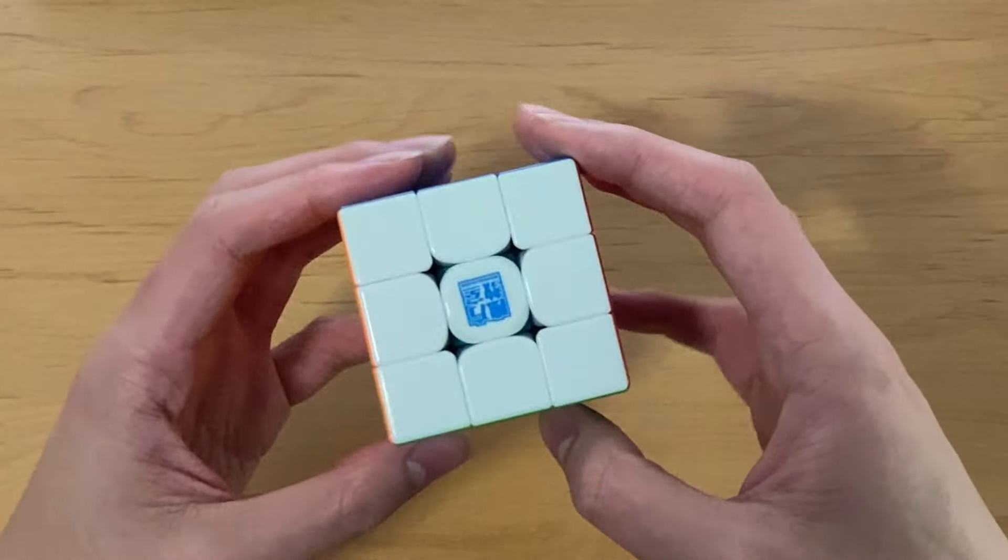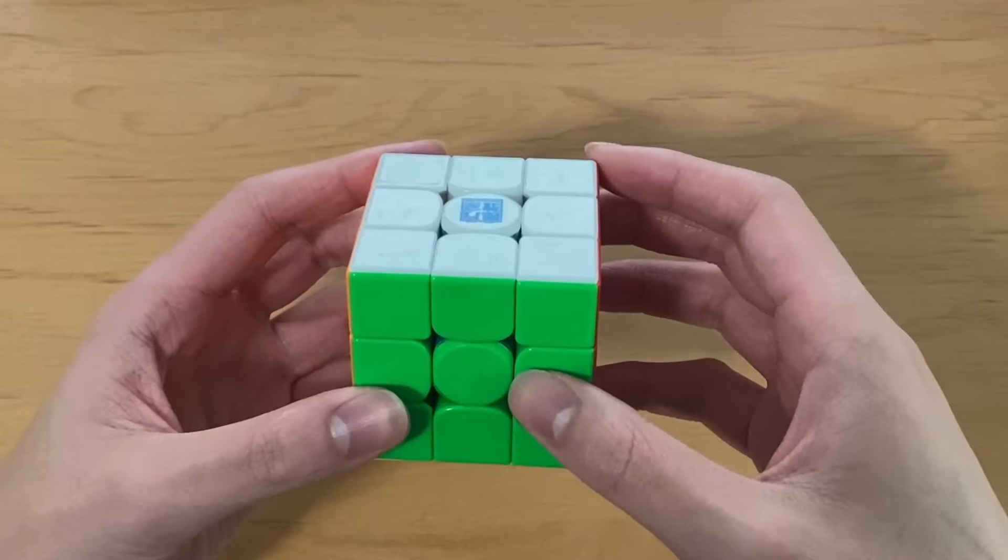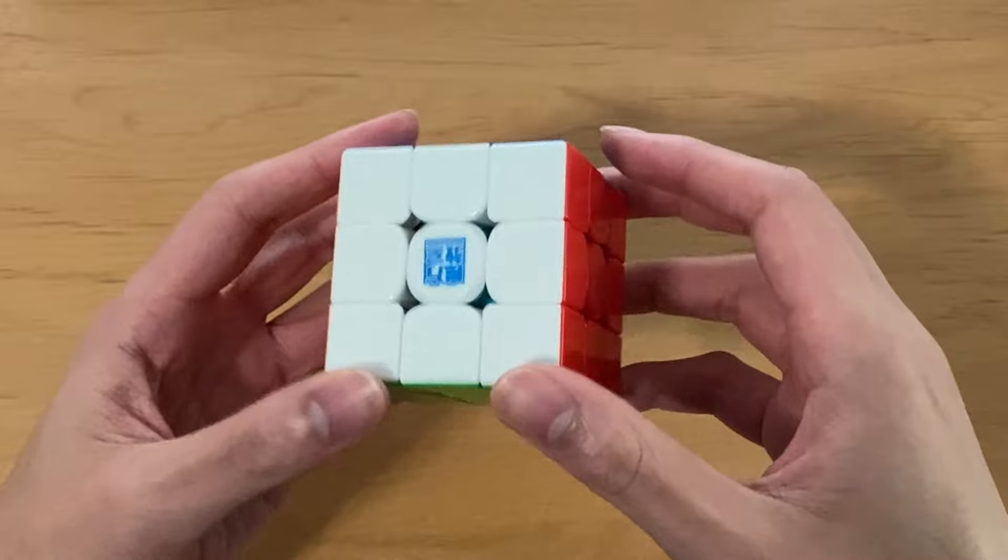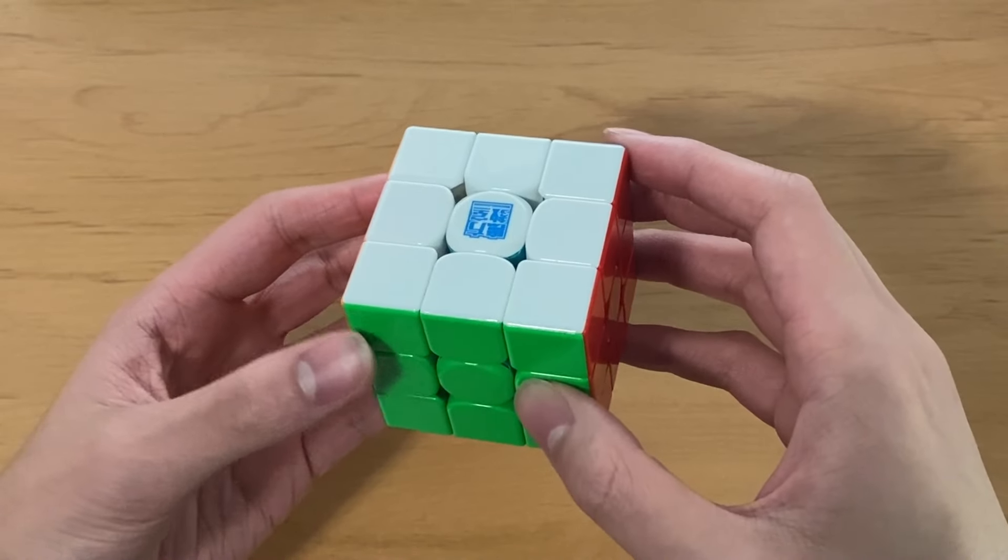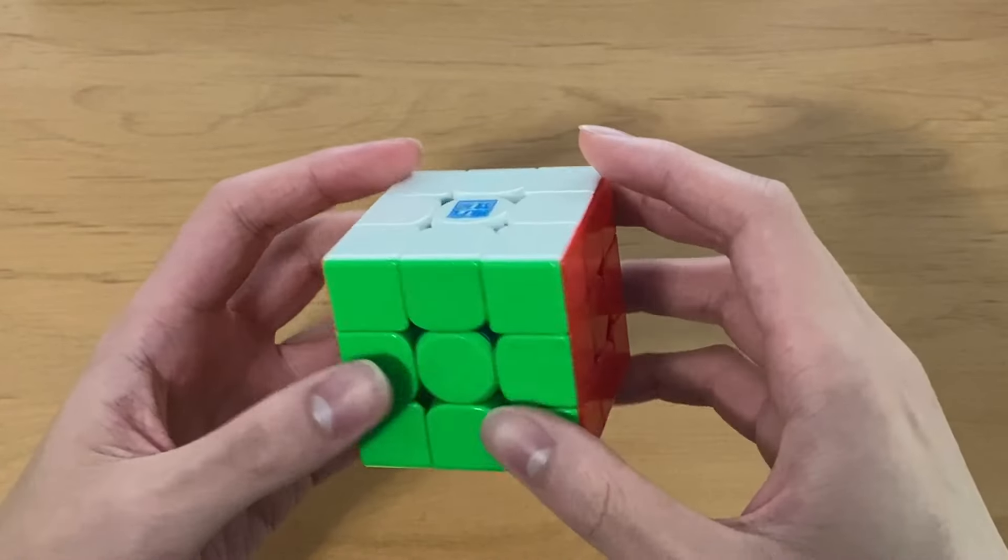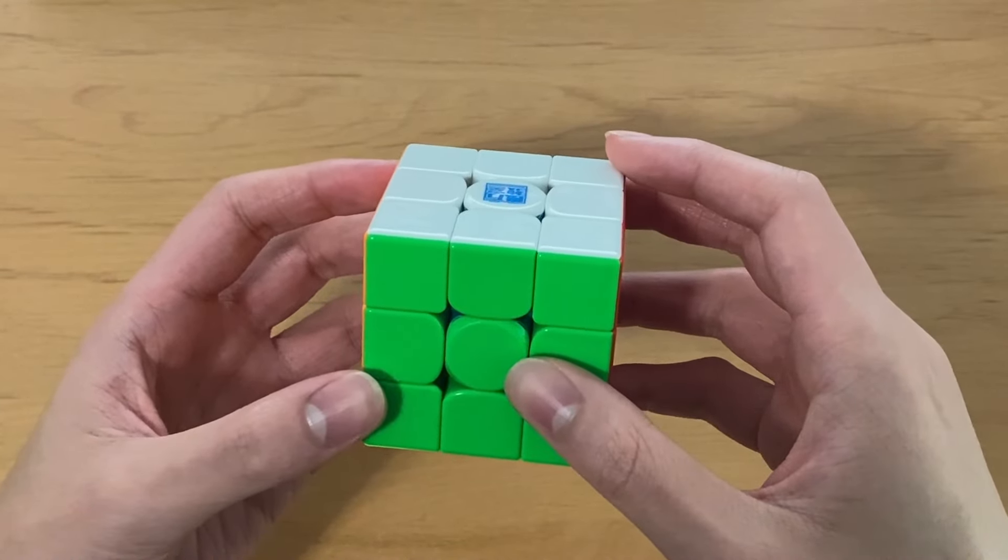Starting with 3x3, I use the Moyu RS3M V5 with ball core and UV. At home I like to use the maglev version, which is the version that you can just buy, but in competition I like to use a spring modded version where you take out the maglev and replace it with springs. I find that the springs make the cube a little bit more controllable, which is very useful in a competition setting.